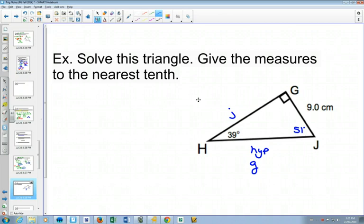Which angle would you like to use, the 39 or the 51? Let's use the 51. Which one do you want to find first, g or j? G. So if we're finding g and I'm using 51, then I want to find the hypotenuse and the 9 is the adjacent.